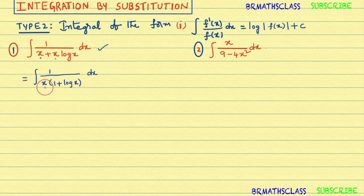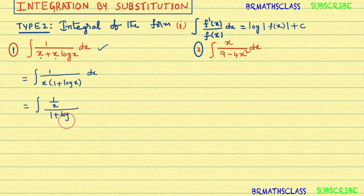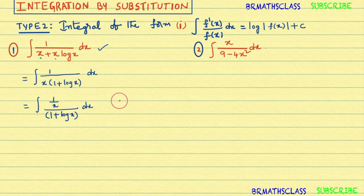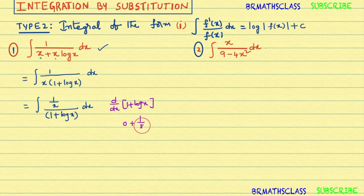Now, this 1 divided by x can be written so that we get the integral of (1/x) divided by (1 + log x) dx. Now observe: what is the derivative of 1 + log x? The derivative of 1 is 0, plus the derivative of log x is 1/x. So the derivative of (1 + log x) is 1/x.